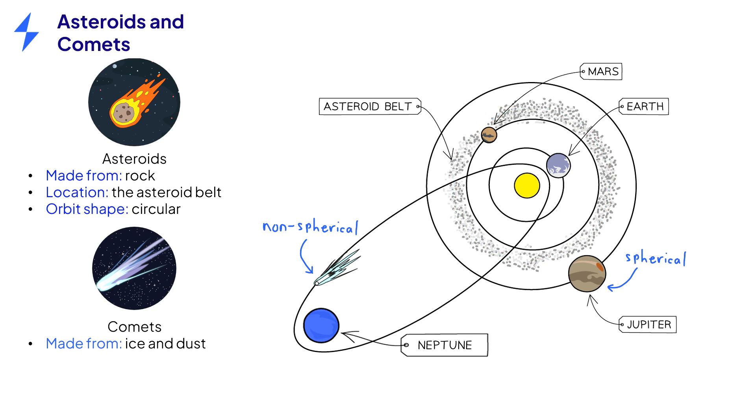Comets are made from ice and dust. Most of the time, they can be found at the furthest reaches of the solar system, beyond Neptune. They follow highly elliptical paths around the sun.